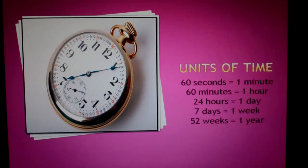Units of Time. 60 seconds equals 1 minute. 16 minutes equals 1 hour. 24 hours equals 1 day. 7 days equals 1 week. 52 weeks equals 1 year.